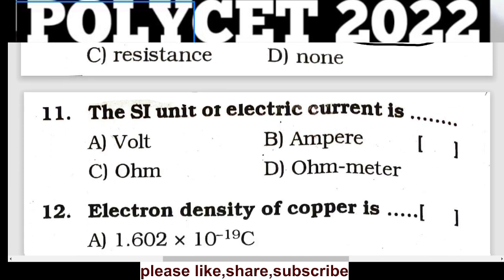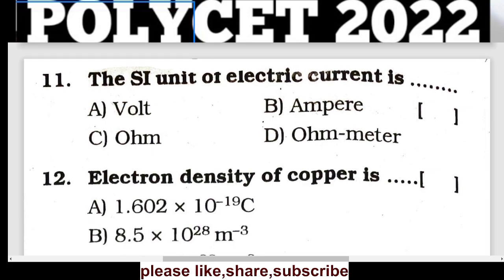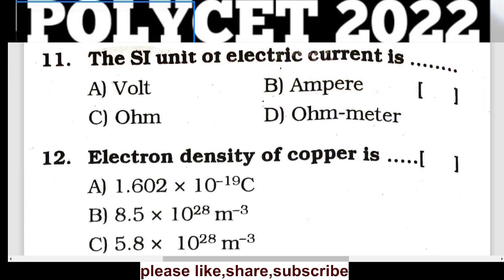Question 11: The SI unit of electric current — option A: volt; option B: ampere; option C: ohm; option D: ohmmeter. The answer is ampere.